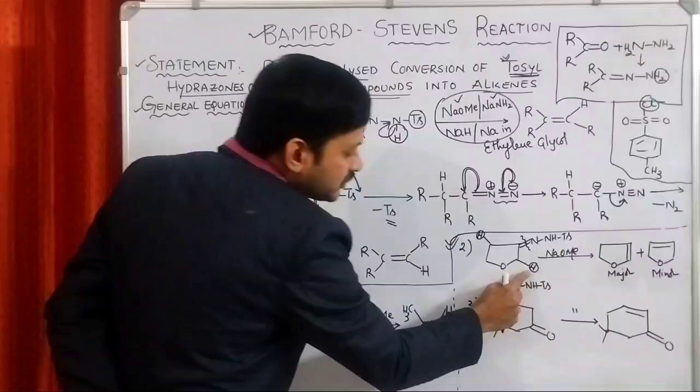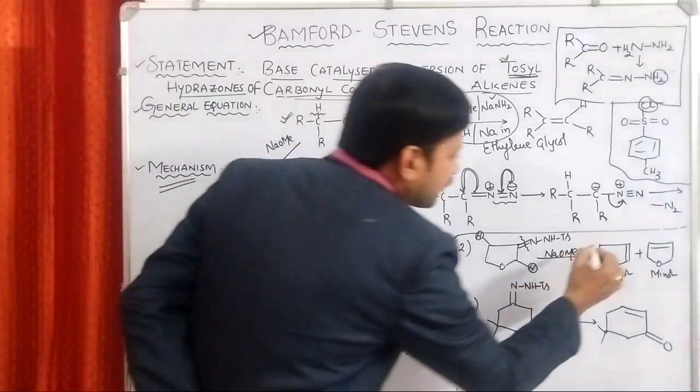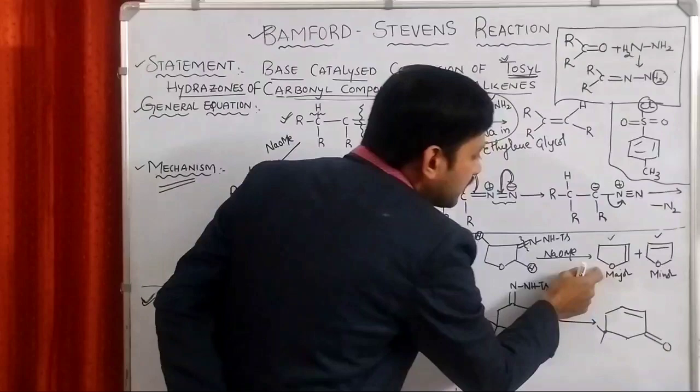If you remove this particular hydrogen, the pi bond will be formed here. If you remove this particular hydrogen, the pi bond will be formed here. Therefore, we are getting two products. This is the first product. This is the second product. The thing is why the first one is the major one?